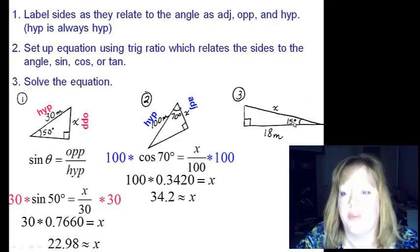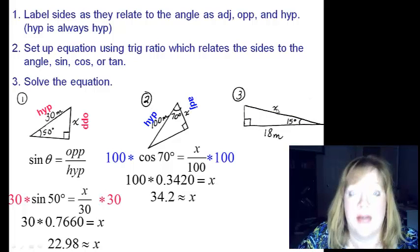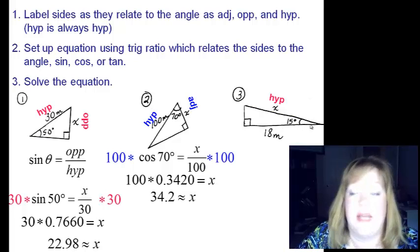Alright, lastly, let's look at this one. This one is going to be a little bit different. Here's my right angle, so opposite the right angle is x, that's going to be the hypotenuse. If I look at fifteen degrees, this is the side that I'm given. The eighteen, eighteen is the value I'm given. Notice that it forms a side of that fifteen degrees. So eighteen is the adjacent.